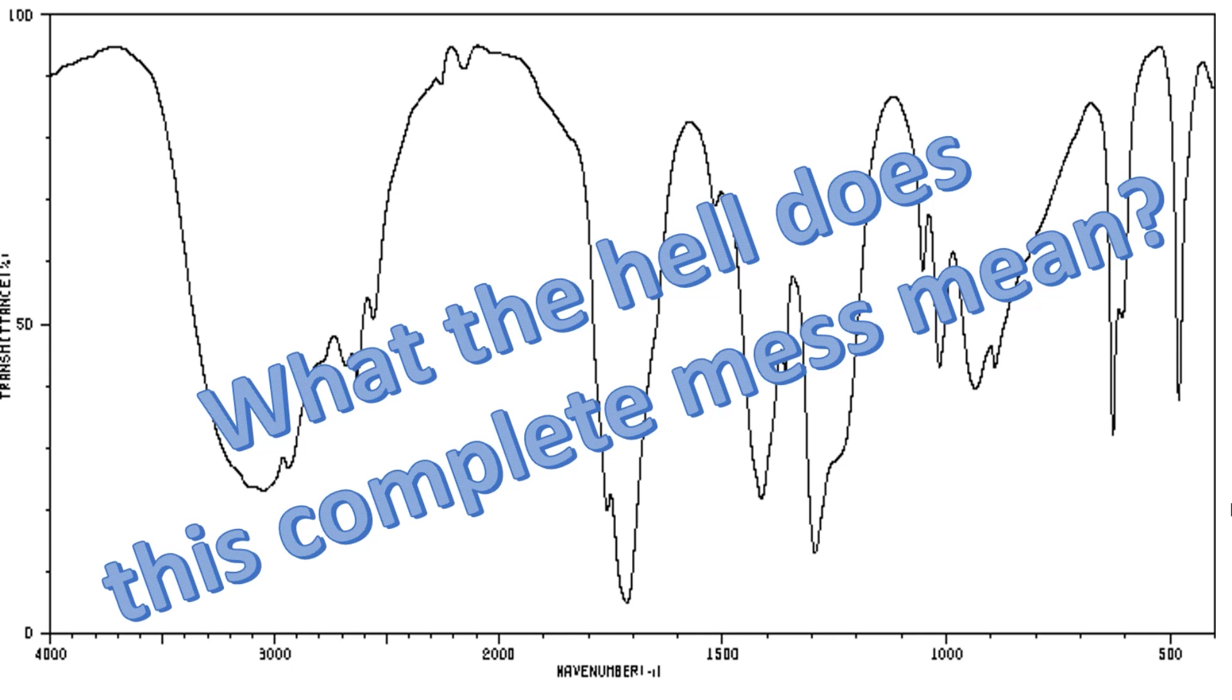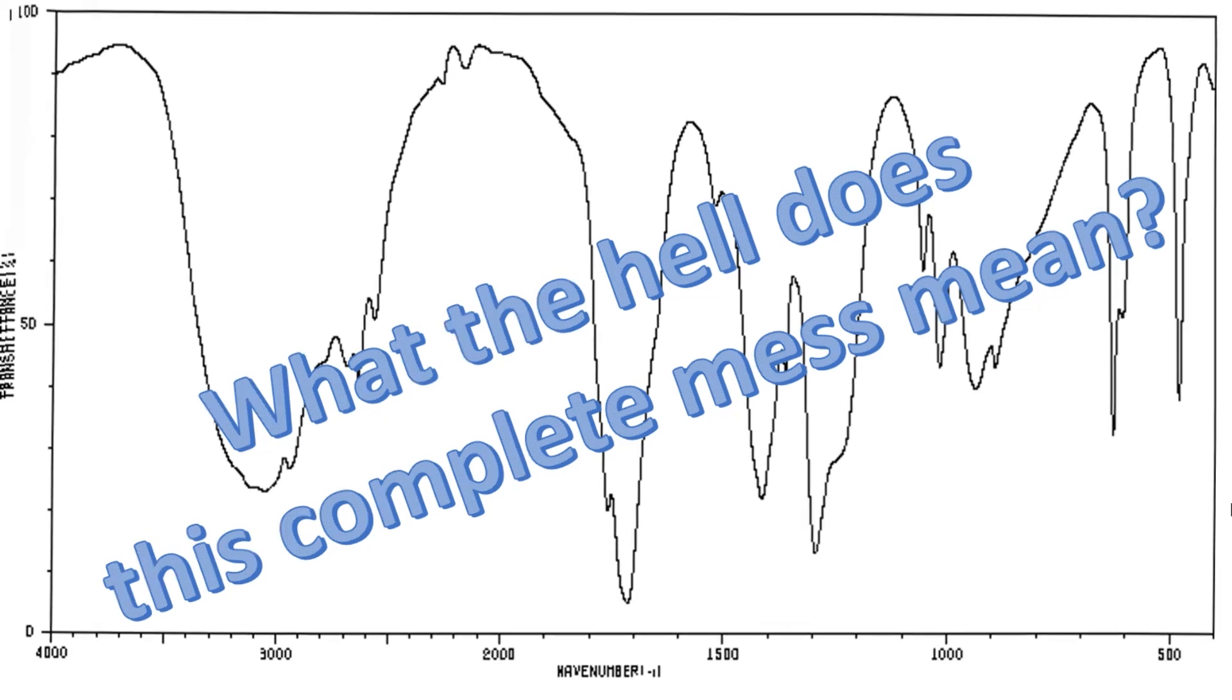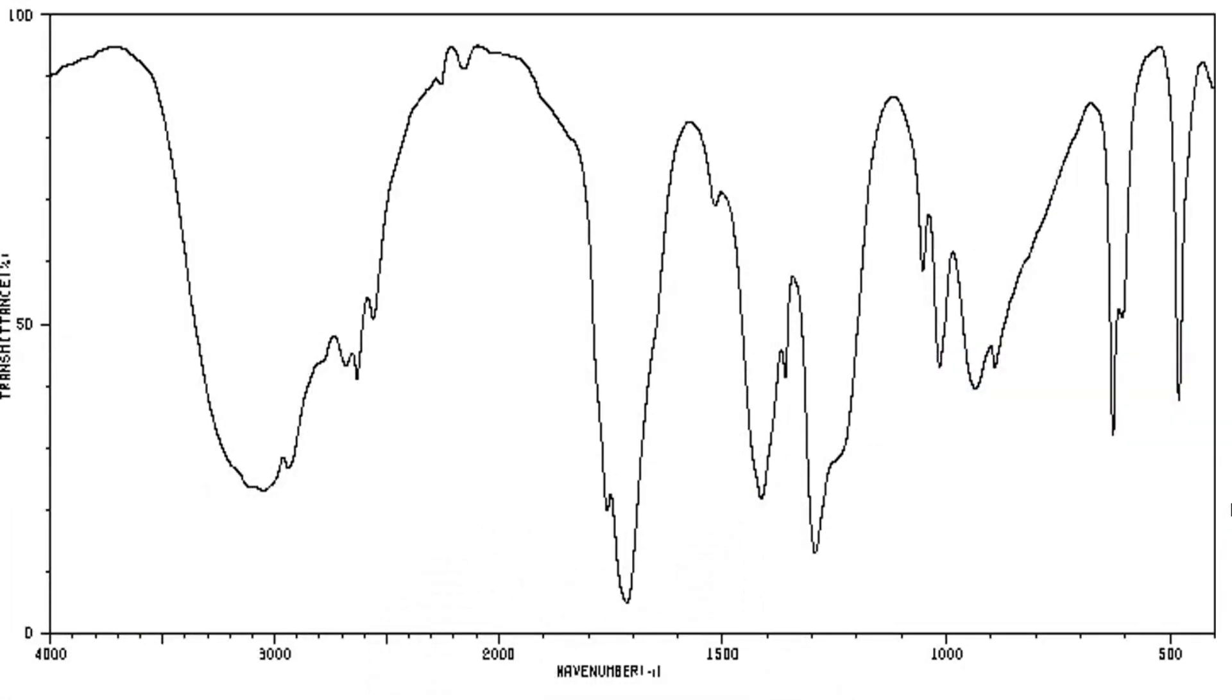So let's start by taking a closer look at our IR graph and breaking it down to see what do these wiggly lines actually mean. The first thing that you need to do is split the whole thing into two. I'm going to draw a line at wavenumber 1500. On the right, we have the fingerprint region.